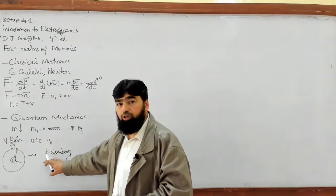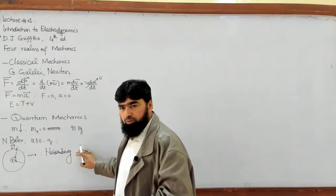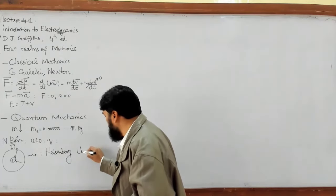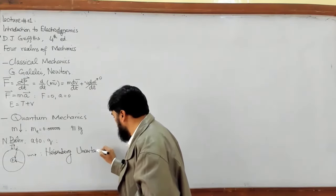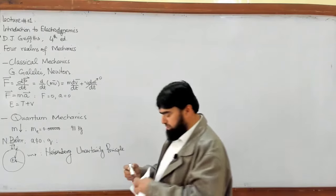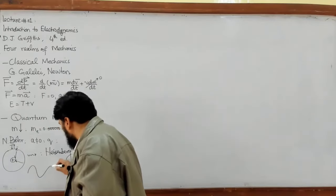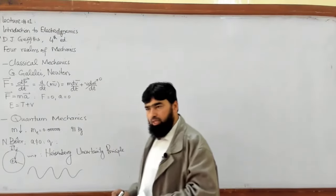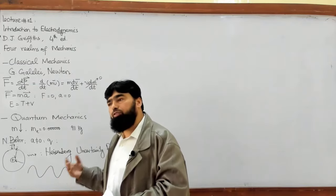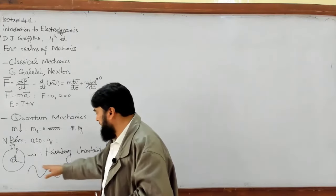That was the reason Bohr remained among the pioneers of quantum mechanics. Another important name is Heisenberg — a German physicist who is the founder of quantum mechanics. He is known for the Heisenberg uncertainty principle, which is considered the basic principle of quantum mechanics. He stated the uncertainty principle.